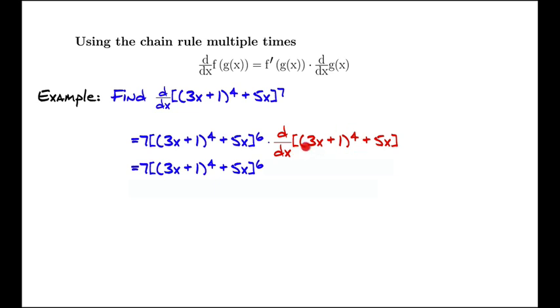That involves the chain rule again, because we have (3x + 1)^4. So to take the derivative of (3x + 1)^4, that's 4 times (3x + 1)^3 times the derivative of what's inside. The derivative of 3x + 1 is 3, so there's an extra 3 that comes out, plus the derivative of 5x is just 5.